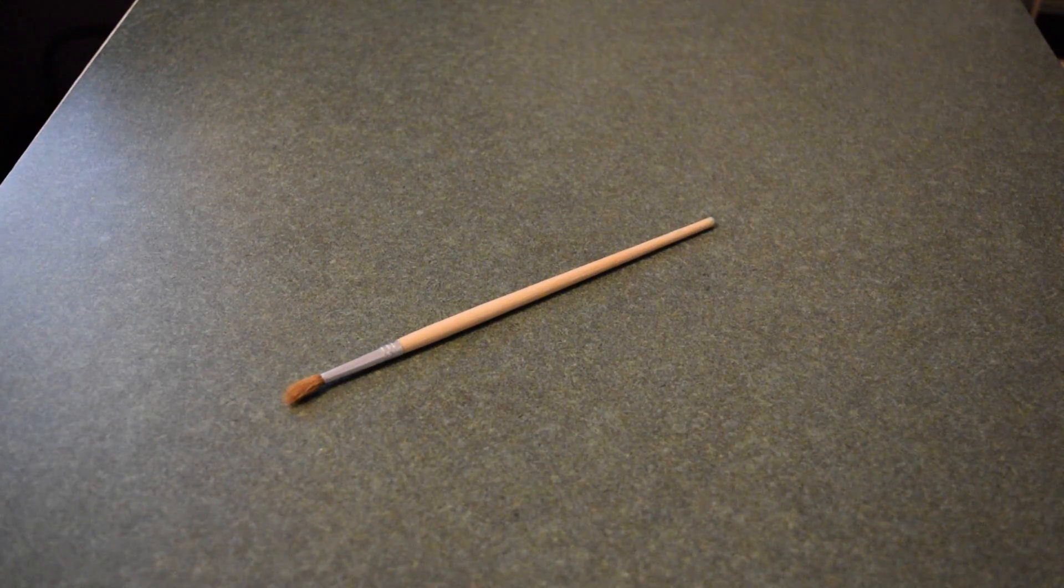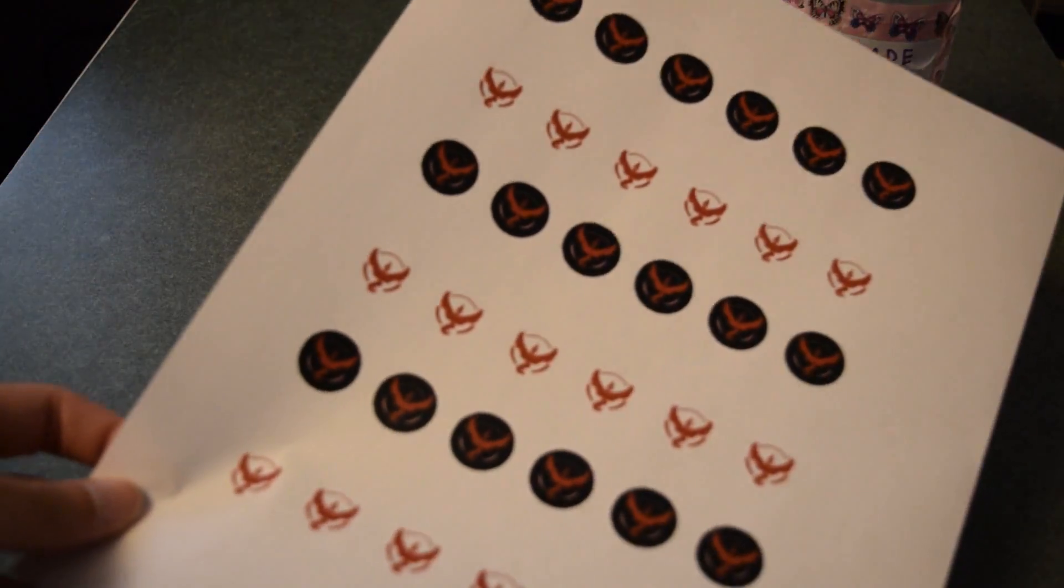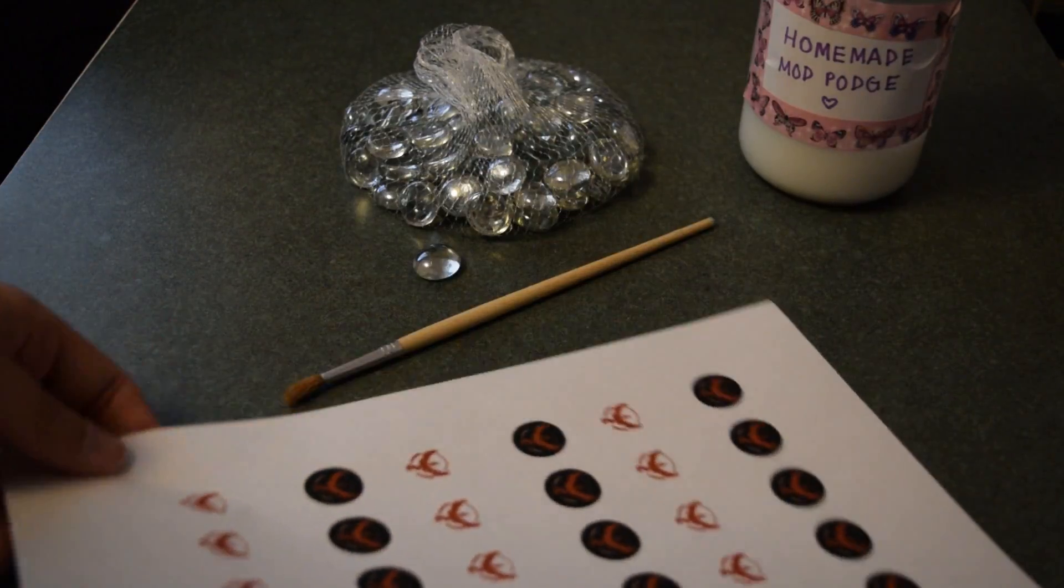For this DIY, you are going to need a paintbrush, mod podge, gemstones, team emblems the size of your gemstones, and scissors.